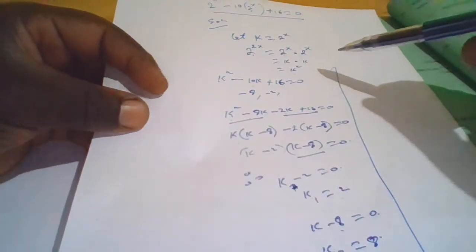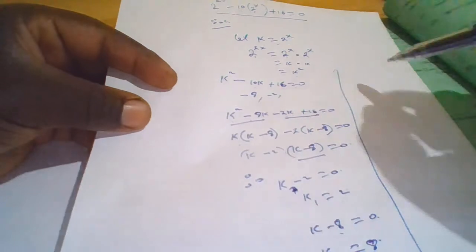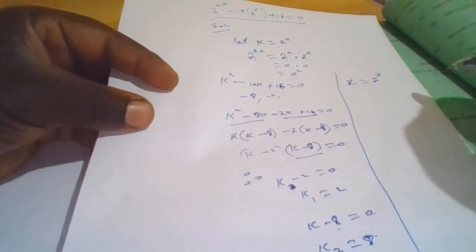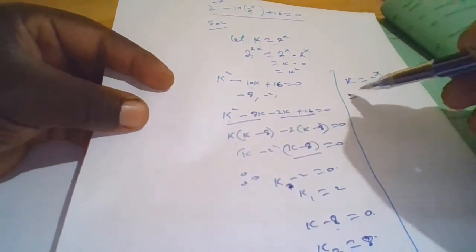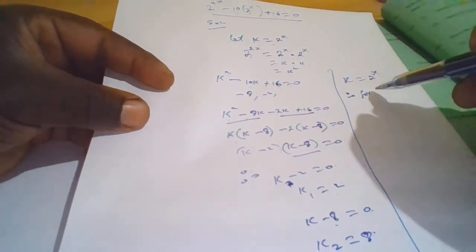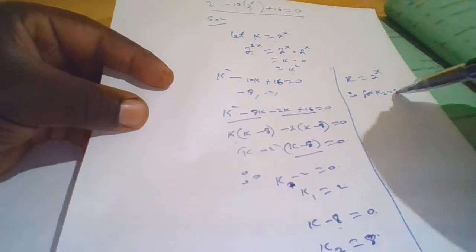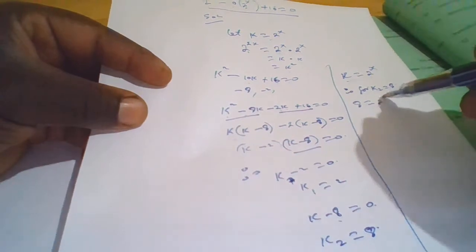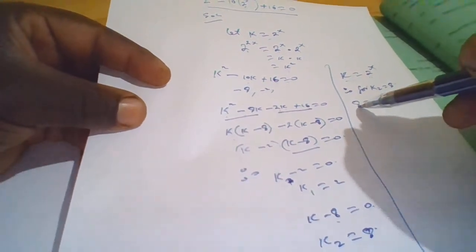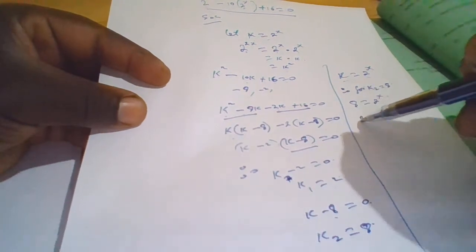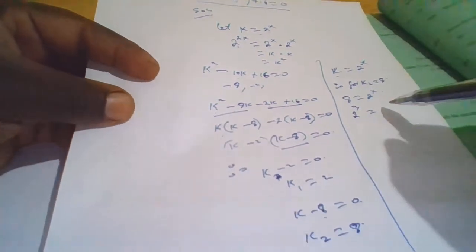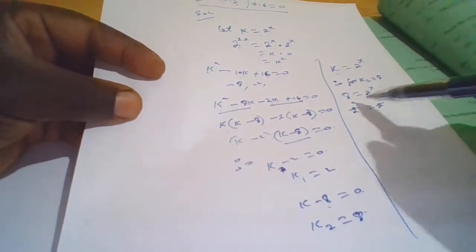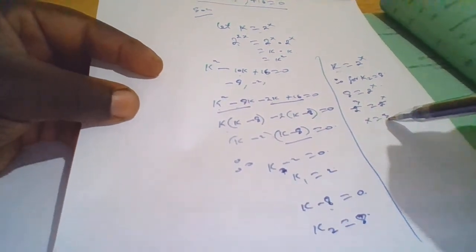Going back to our substitution where k equals 2 raised to x: for k₂ equals 8, we have 8 equals 2 raised to x. We express 8 as 2 raised to 3, so 2 raised to 3 equals 2 raised to x. The bases cancel, therefore x equals 3.